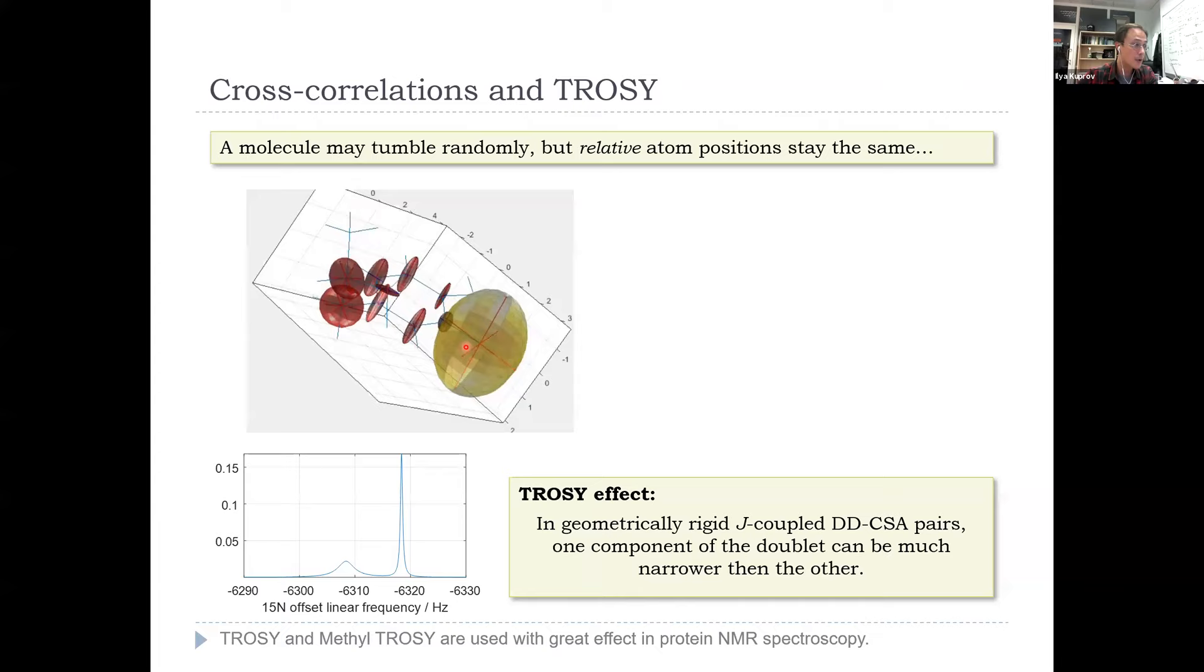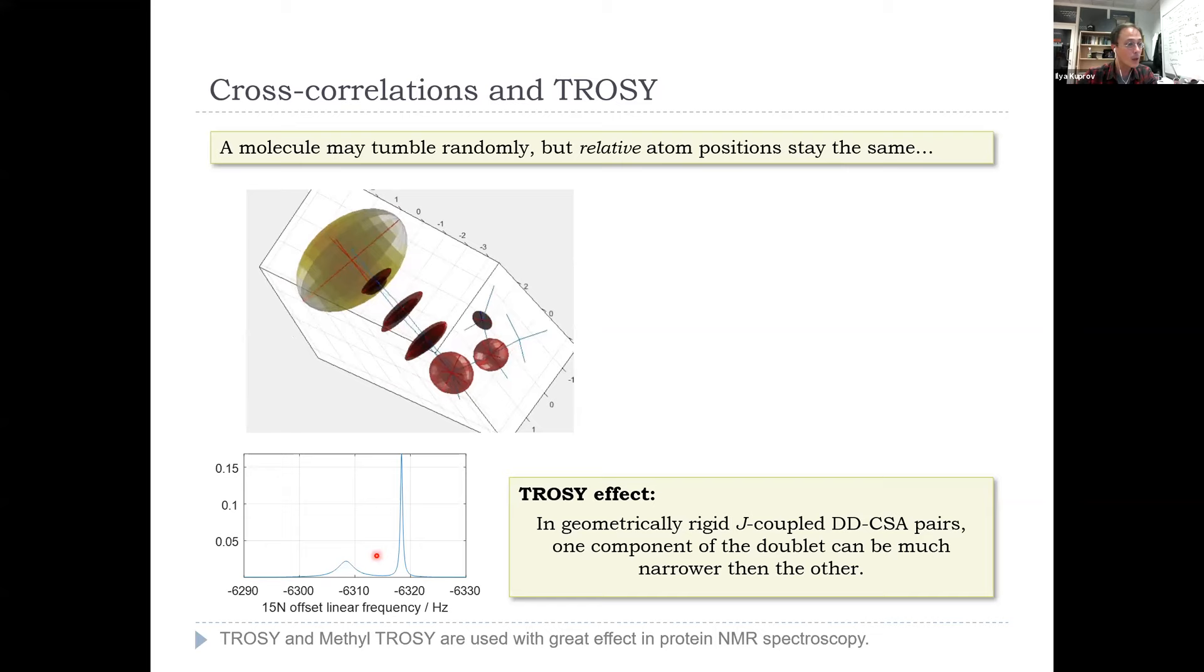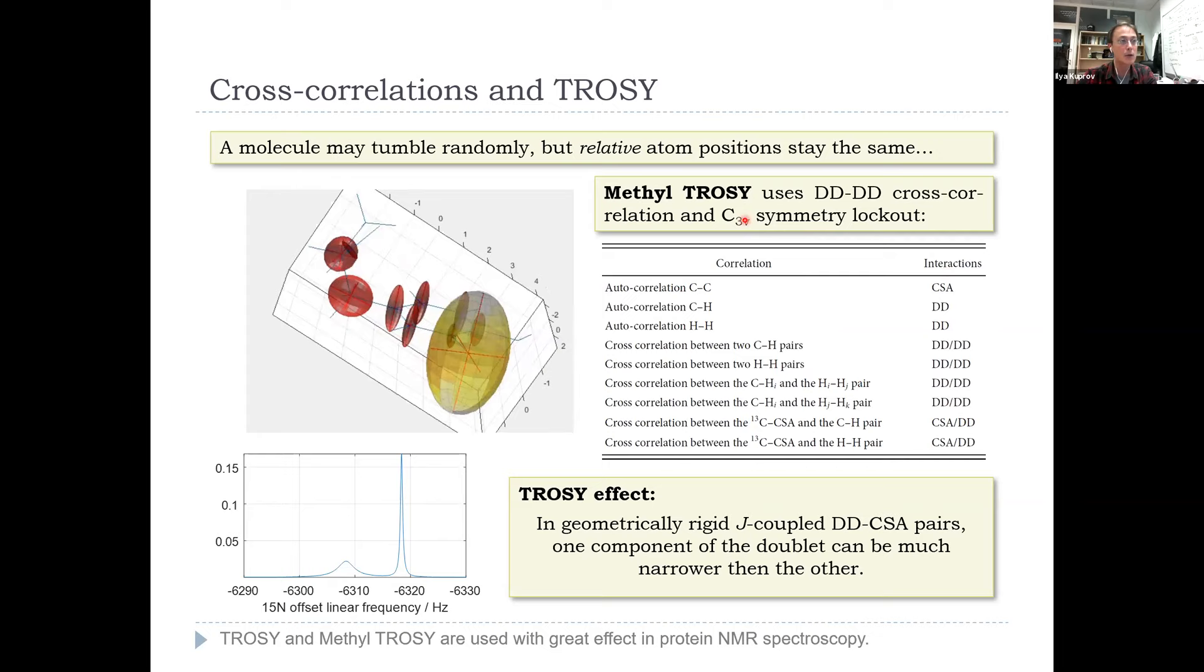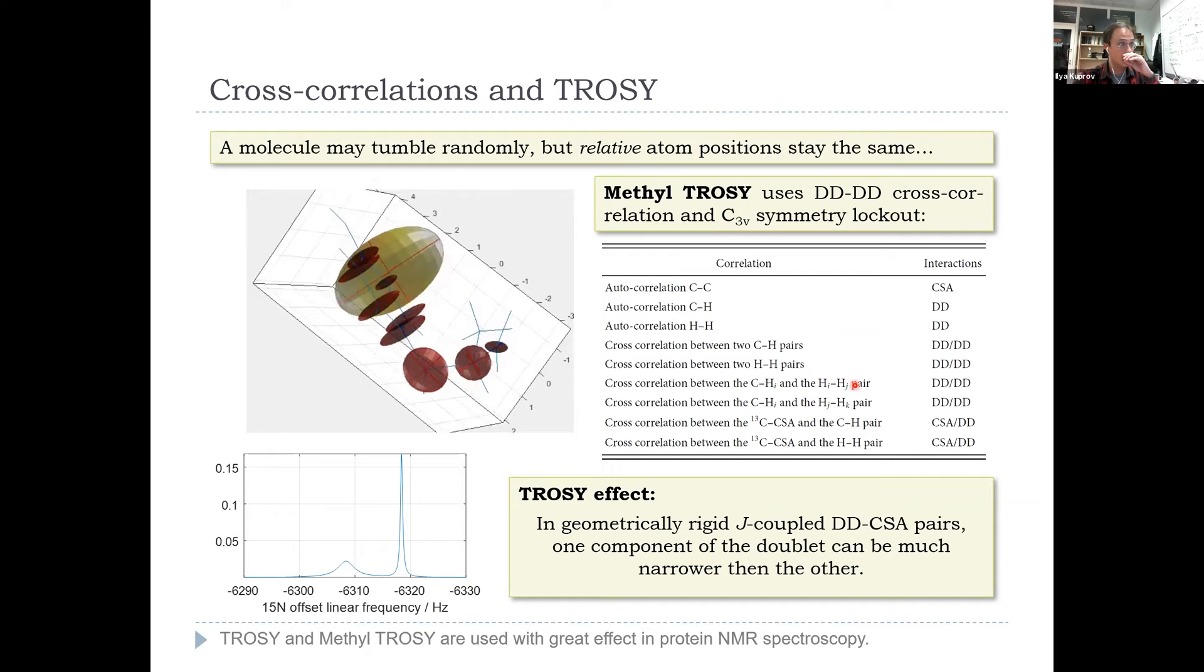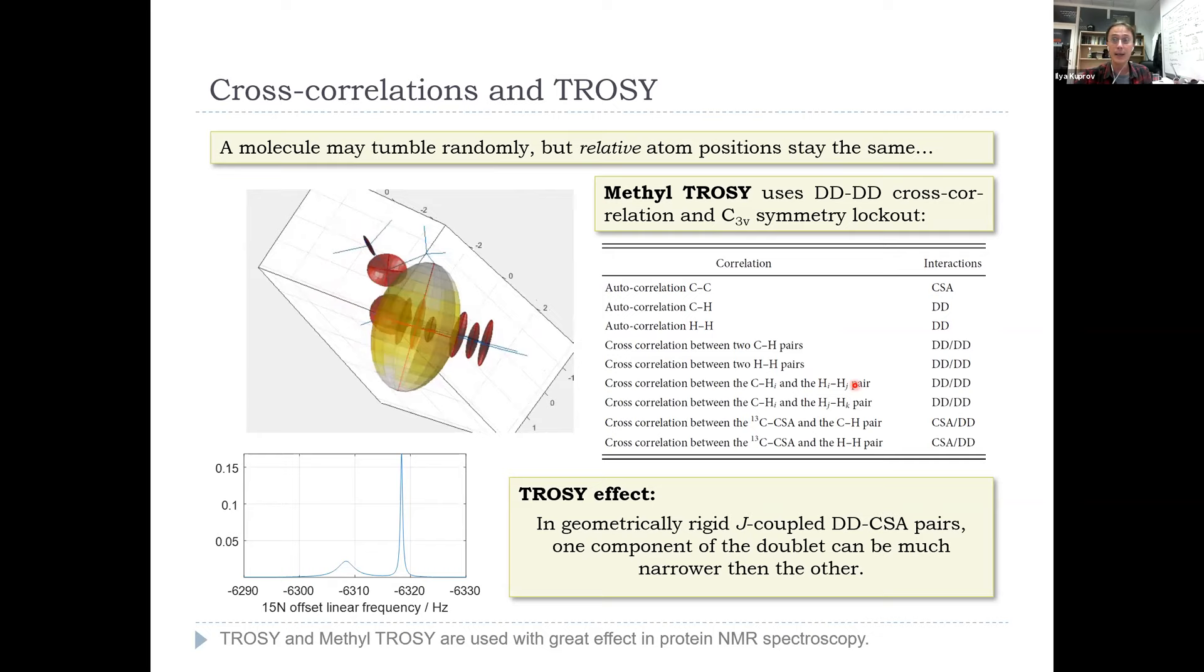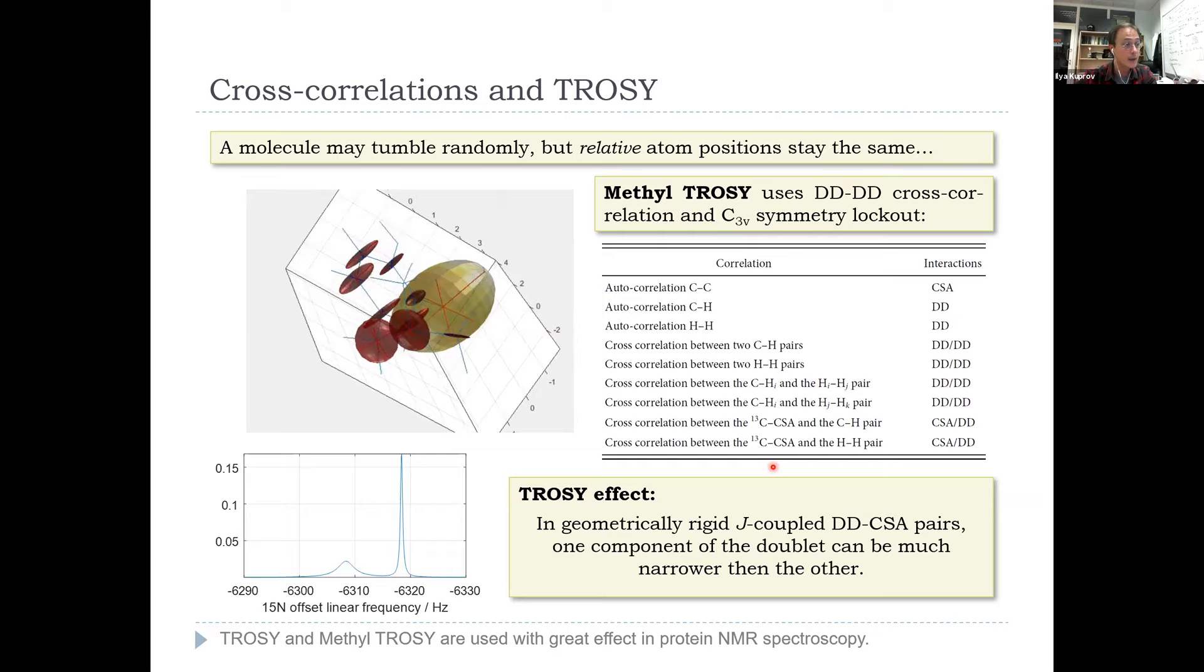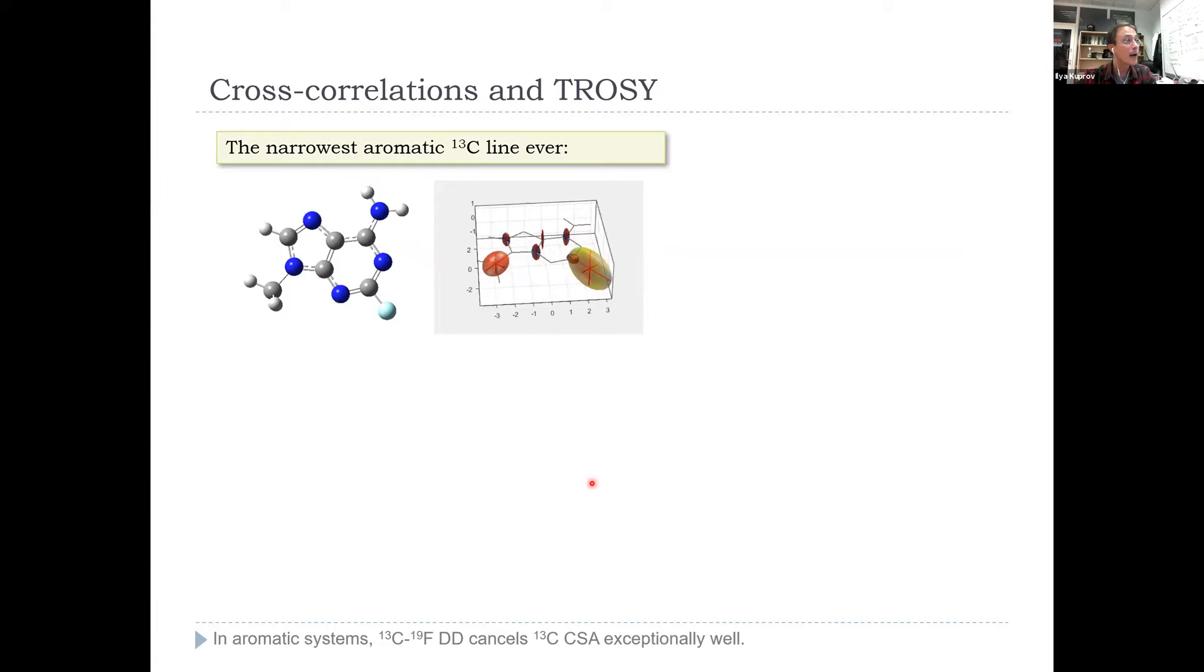That's the standard Pervushin kind of TROSY, where one line can be much narrower than the other. Methyl TROSY has got a lot more cross correlations in it and also symmetry lockout effects on irreducible representations of C3V. Incidentally, Spinach detects long-lived states automatically by diagonalizing Redfield super operator and looking at the eigenvectors that correspond to small eigenvalues in there.